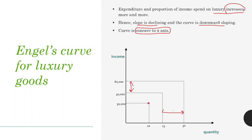This gap means the slope is declining. In the first case, the change is 10,000 in income and 5 in luxury quantity, giving a slope of 10,000/5. In the second case, the income change is 20,000 and the quantity change is 15, giving 20,000/15. The slope is decreasing because the change in quantity is proportionally greater than the change in income. Therefore the slope is declining, the curve is downward sloping, and as we can see from the curve, it is concave to the x-axis.